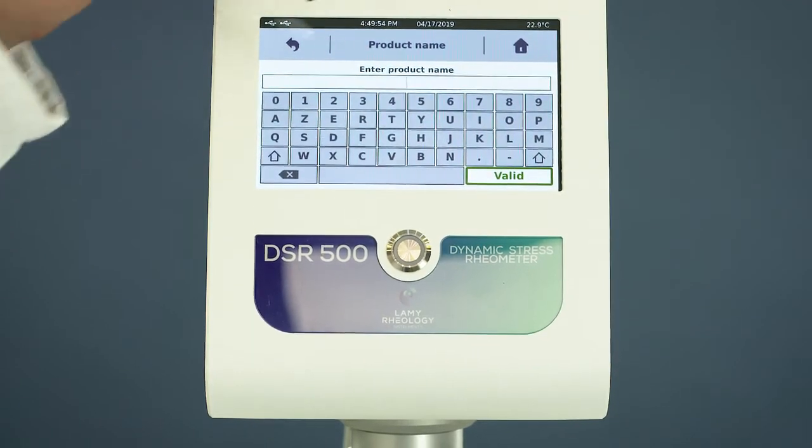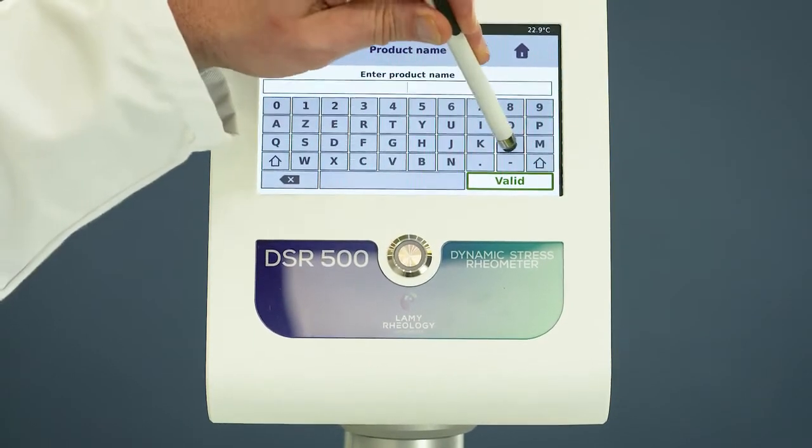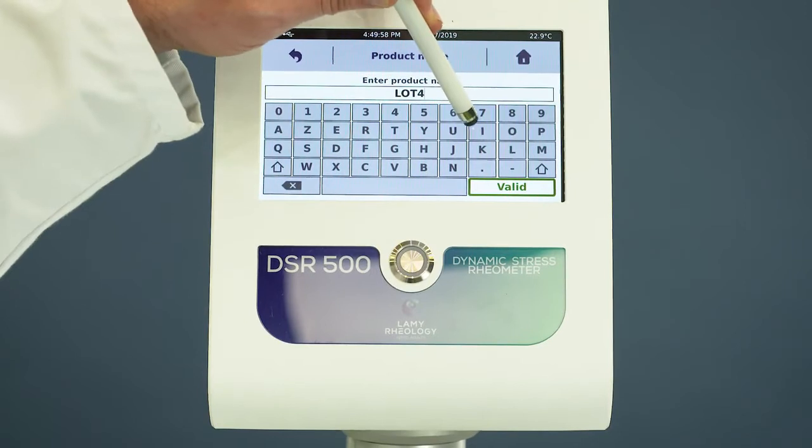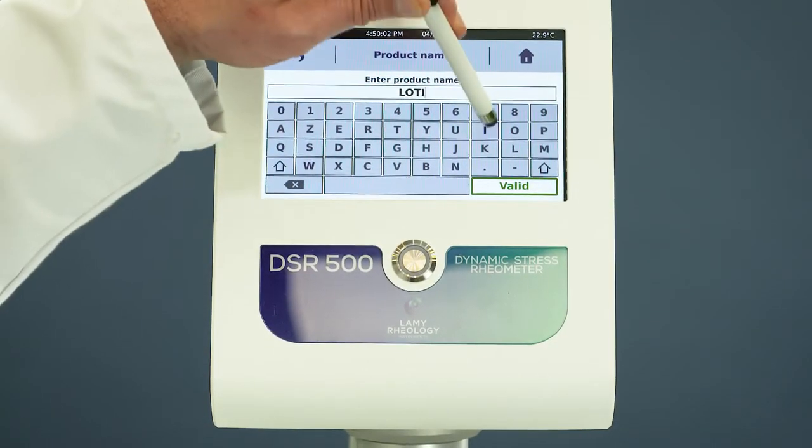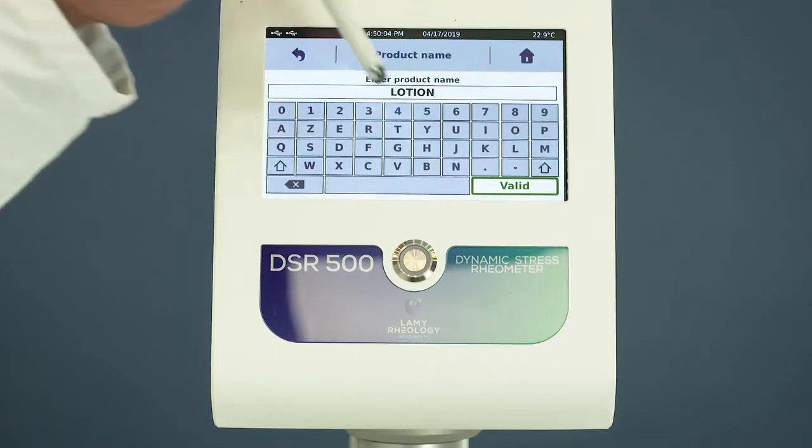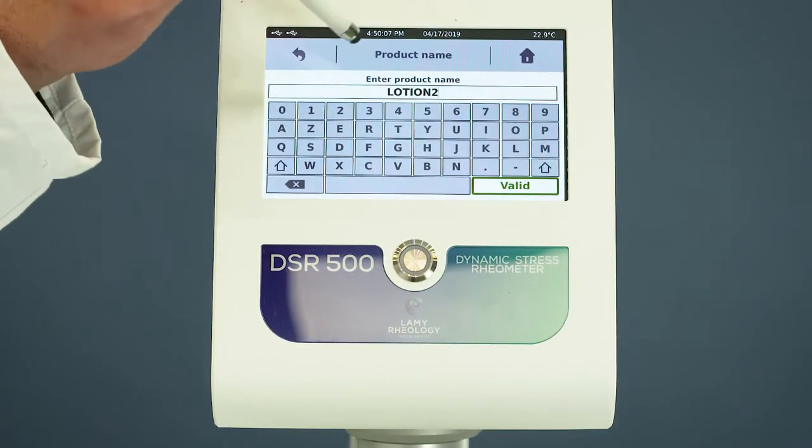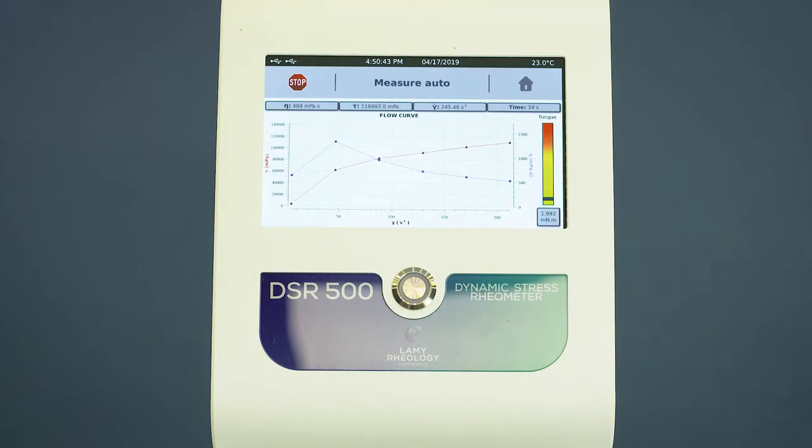Click start and set the name of the file. DSR 500 starts the test and shows you the curve directly on the display.